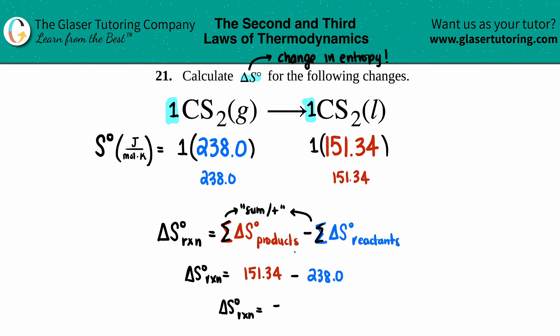If we have the correct number of sig figs, we're only going to have one sig fig after the decimal, so it'd be negative 86.7. Then units for delta S, according to your appendix values, are joules per mole times kelvin, and that is the final answer. Not bad—just comes from that one standard equation.